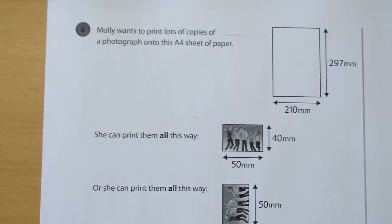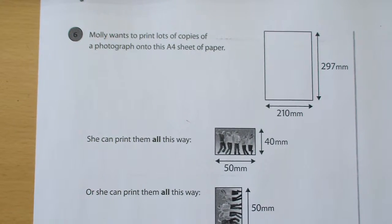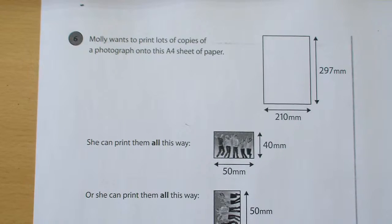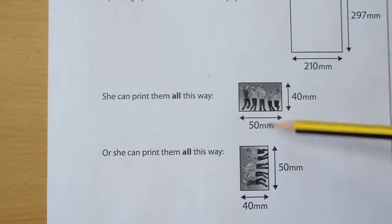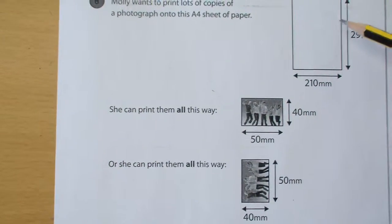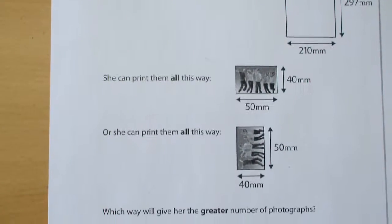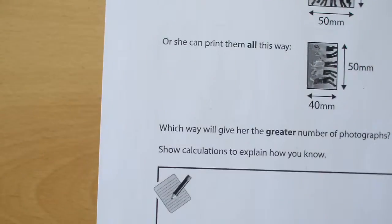Pupils are given information about an A4 sheet of paper with dimensions 210mm by 297mm. You've got a photograph, and they're trying to figure out if it's best to place multiple copies of the picture this way onto the sheet, or this way onto the sheet, to figure out the best way of printing as many pictures on that one A4 sheet as possible.